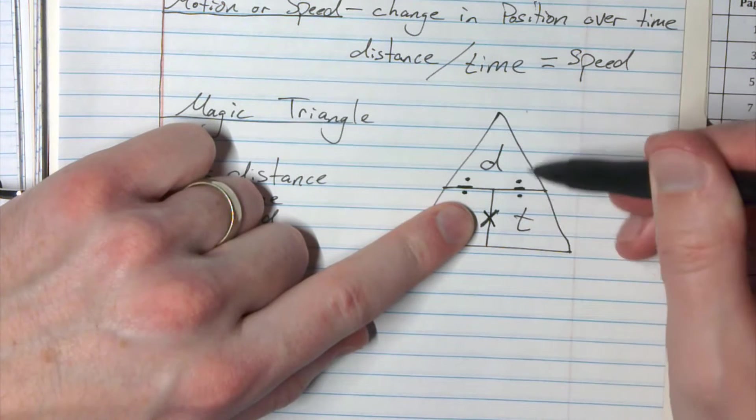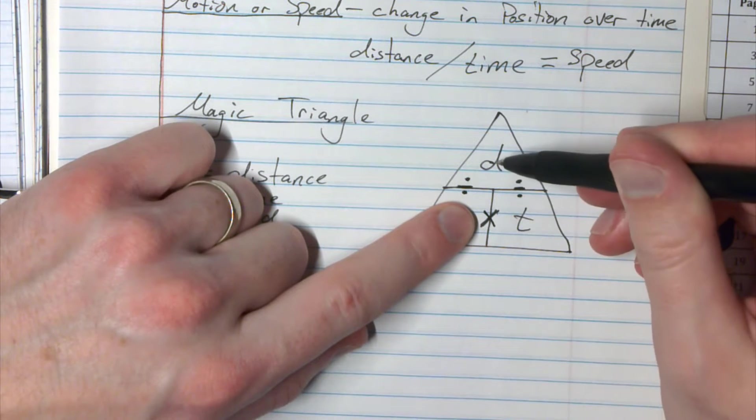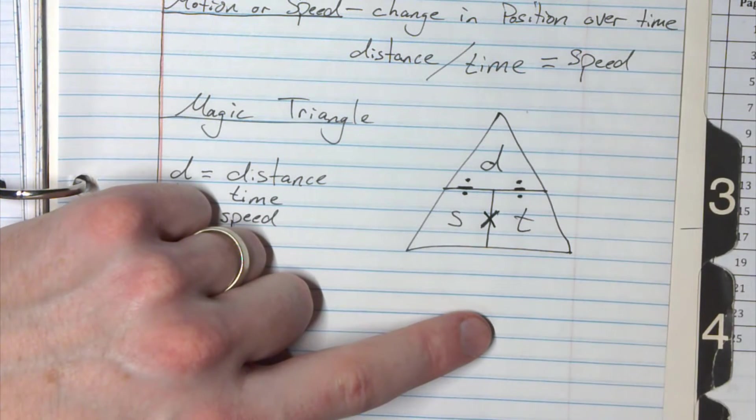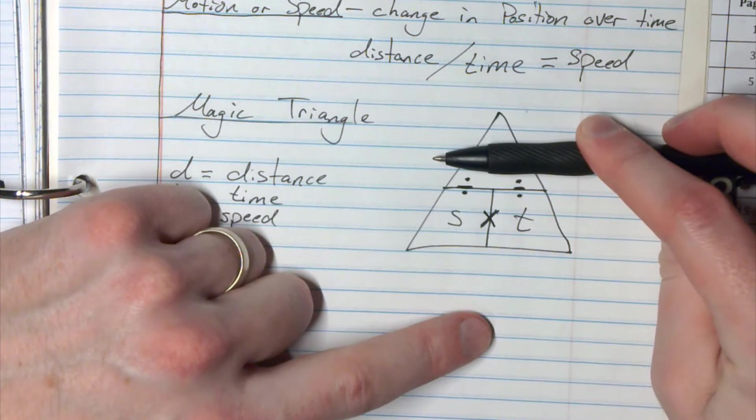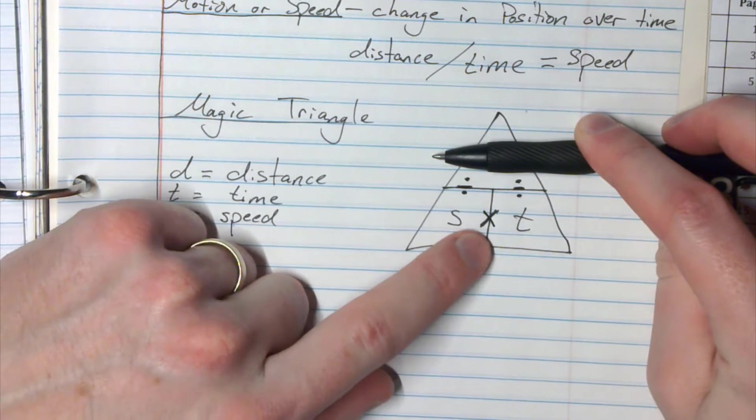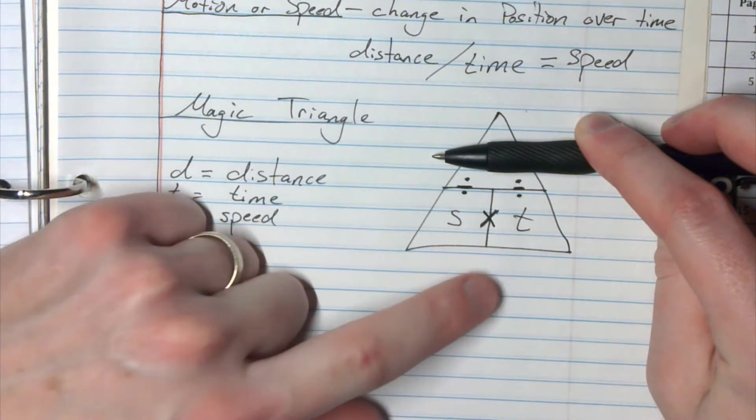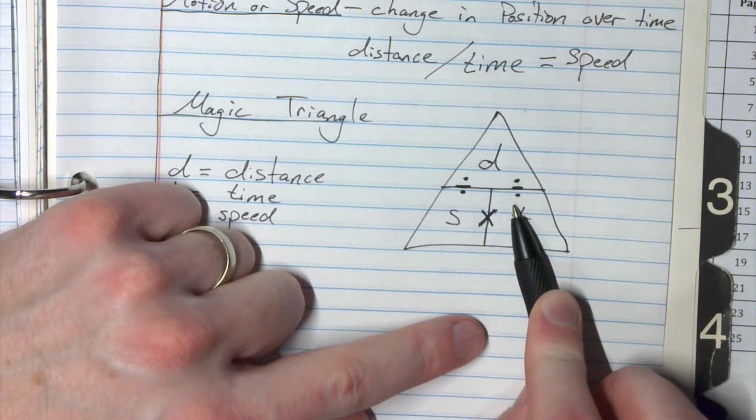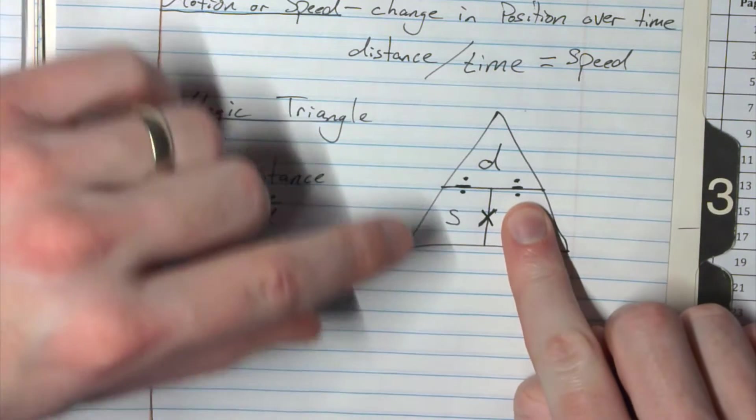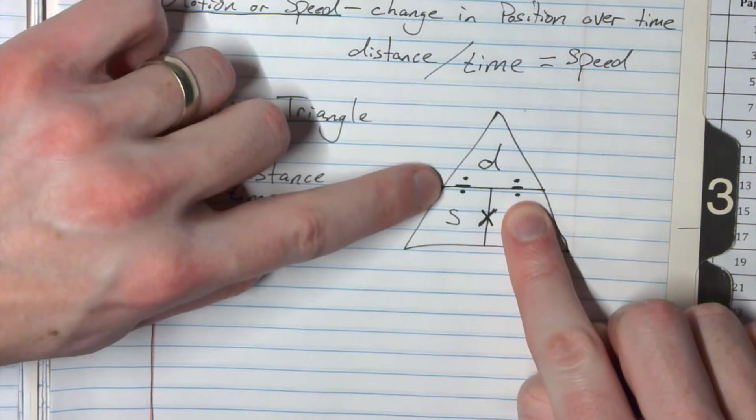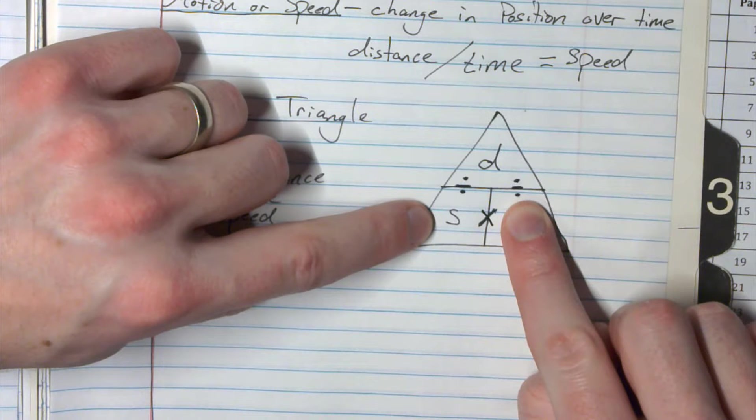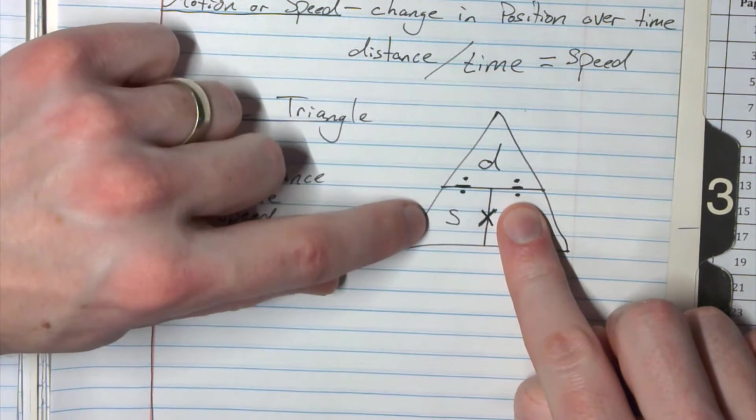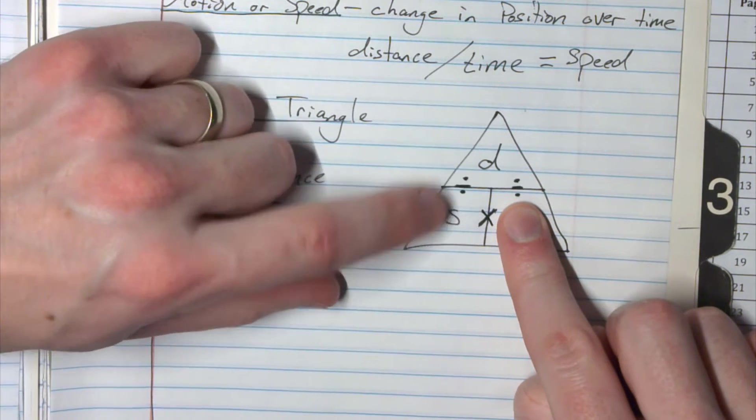If I'm looking for distance, so I cover this one up, now I'm left with speed times time. Okay, so they're next to each other, I multiply. Finally, if I cover up the T, now I'm left with the distance divided by speed. So I'm looking for time, it's distance divided by speed. So those two would be given to you, you just have to divide them.